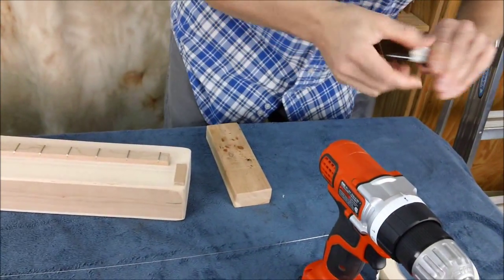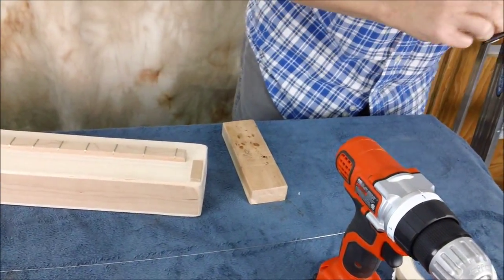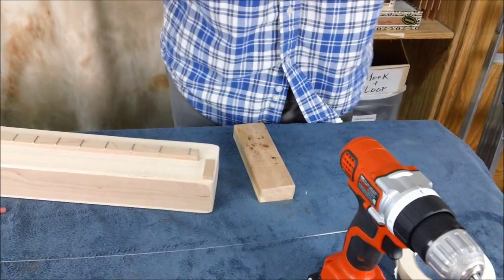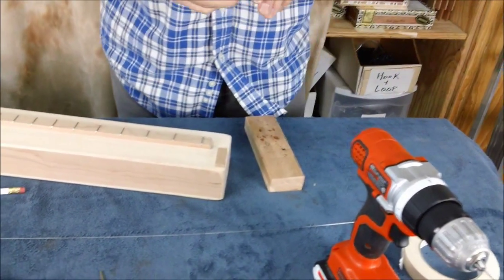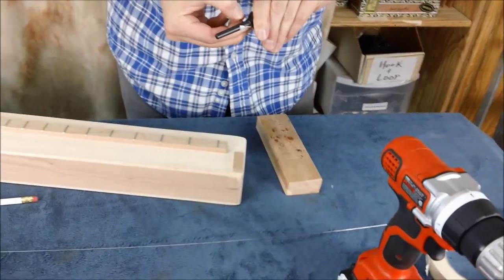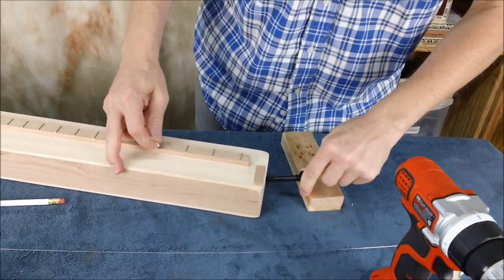And it does actually help to have some tape on the back here. So that's how you drill the hole for your violin peg. Take the tape off and put that back in there.